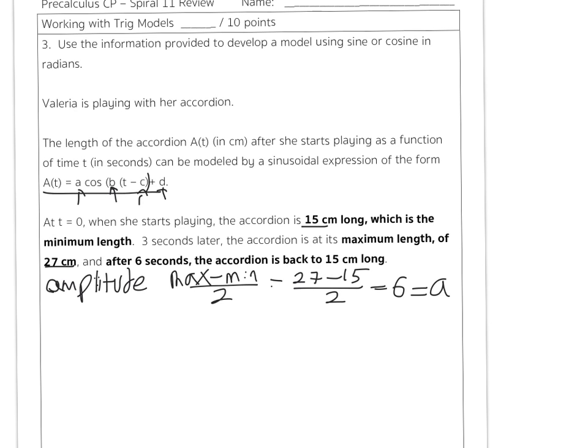Next up, we're going to find our midline. In other words, our d value. Our midline is going to be the max plus the min, so the maximum plus the minimum, divide by 2. 27 plus 15, divide by 2, is going to be 21, and that's our d value.